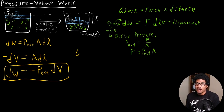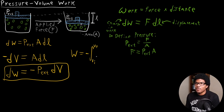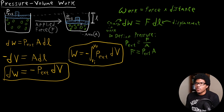If you wanted to solve for the total work W, not just DW, you would have to integrate the right-hand side: W equals the integral from initial volume VI to final volume VF of negative P external DV. So we end up with two forms — the differential form and the integral form of pressure volume work.